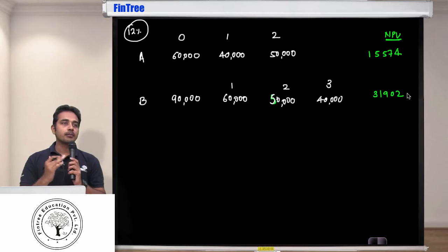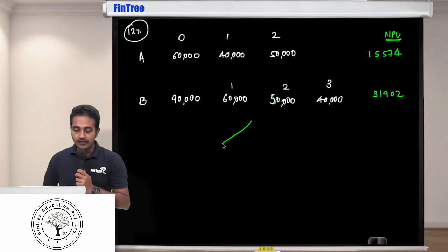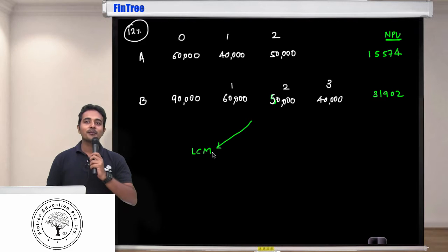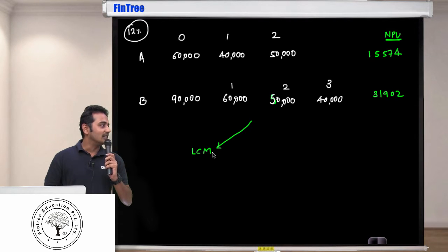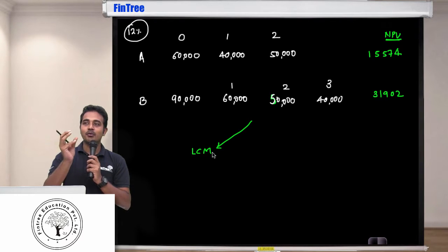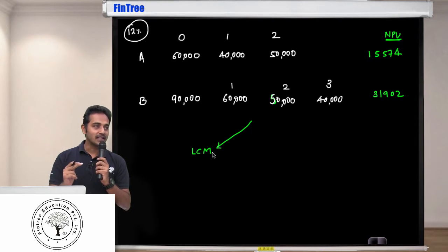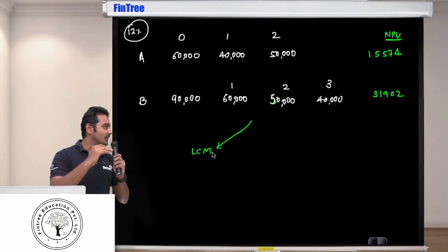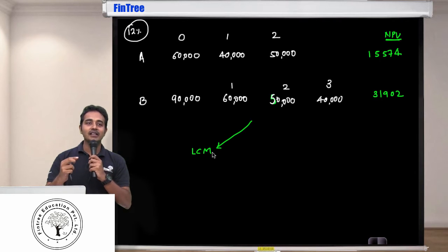There are two solutions which have been proposed to handle this. One way is you use the LCM method, least common multiple. Project A is for two years, B is for three years. What you do is project A three times and you do project B two times so that both of them become six year projects.